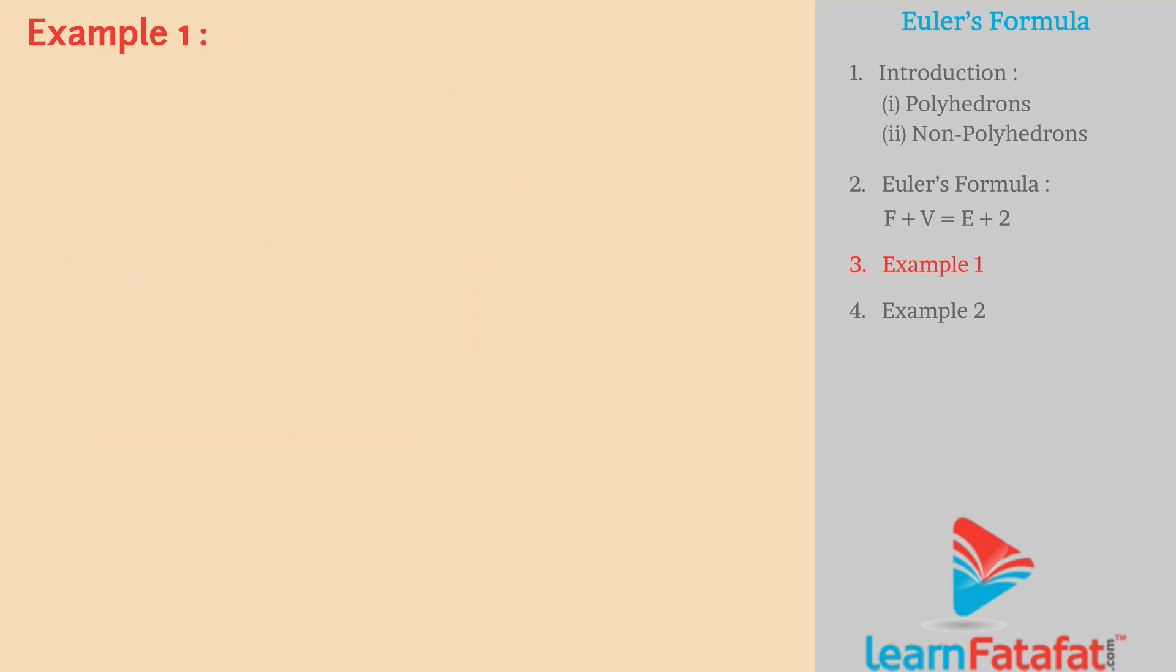Example 1: Using Euler's formula find V if E is equal to 30 and F is equal to 12. Solution: Euler's formula is F plus V is equal to E plus 2.